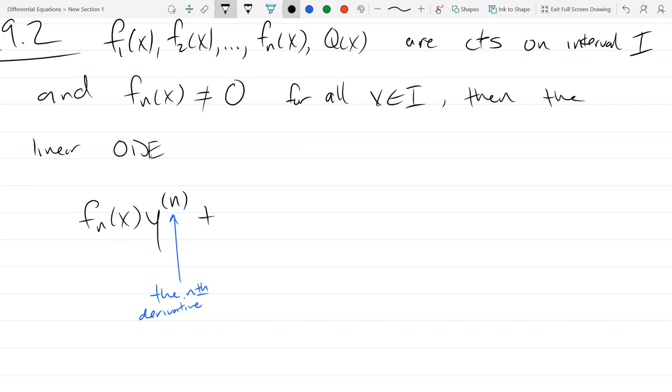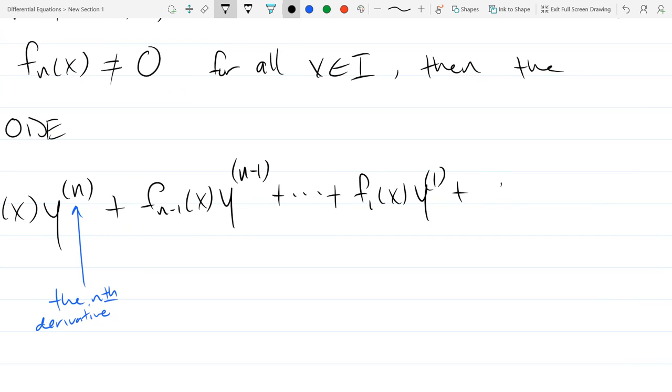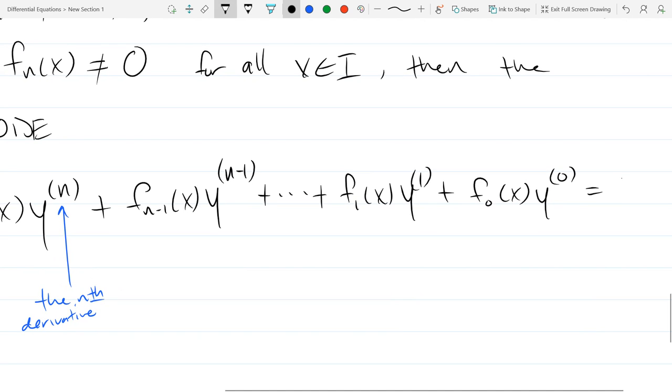And that's the first. And then plus, and this pattern is just going to continue. The next function and the next lower derivative of y. Plus dot dot dot plus f1 x. Now I can write y prime. If you want to keep the pattern going, you can put the one. It's a prime if it's not in parentheses. If you put it in parentheses, it's a one. Plus f0 of x, which means take no derivatives of y. Equals q to the x, or q of x.